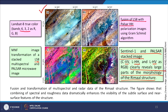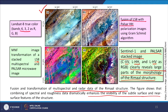The effectiveness of fusion depends on the location and area. If data from multiple radar and optical sensors is available, one should try to create fused or merged products and assess which gives better results — this cannot be standardized for all areas. Combining spectral information and radar roughness information can change or enhance the visibility of subsurface features or near-surface structures as demonstrated in this example.